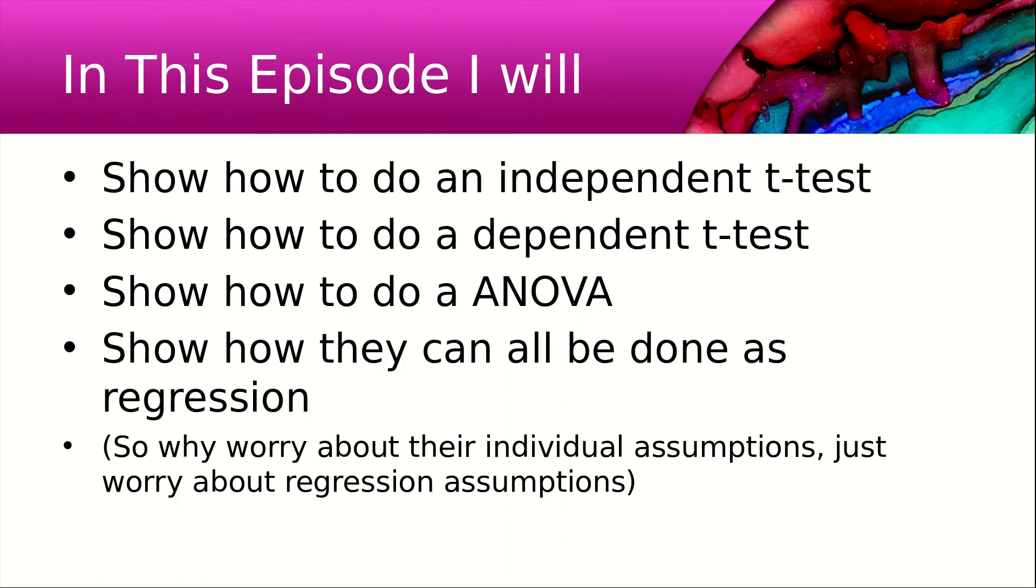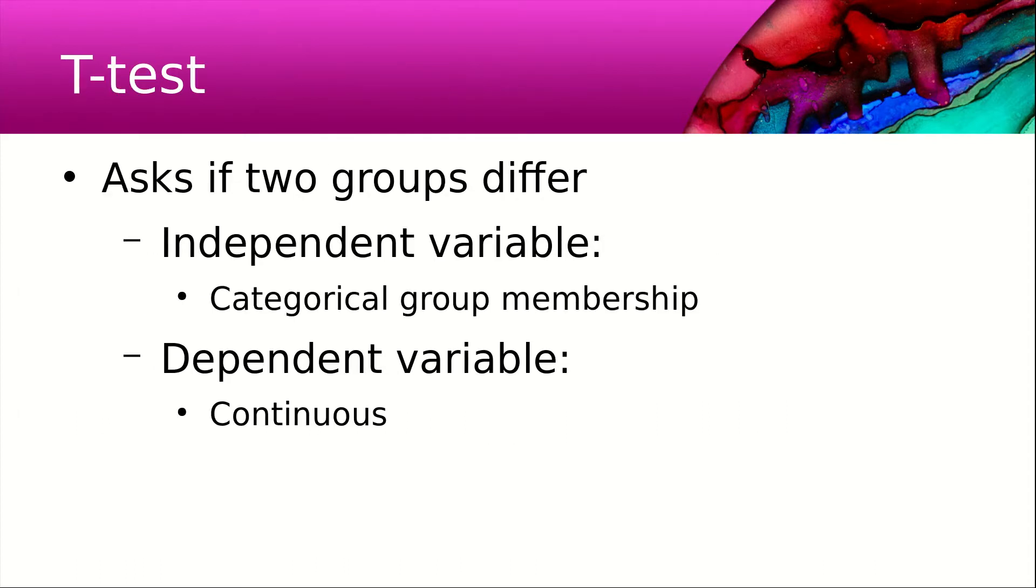My conclusion will be why worry about their individual assumptions if we can just worry about regression assumptions. T-test asks if two groups differ, and the independent variable is a category group membership variable, and the dependent variable must be continuous.